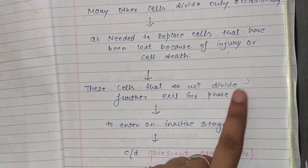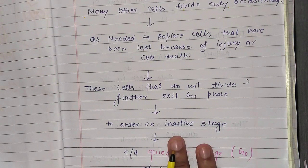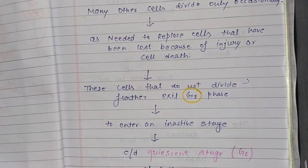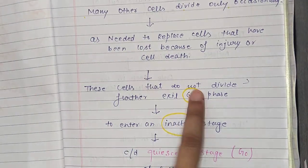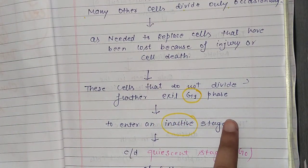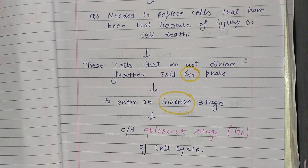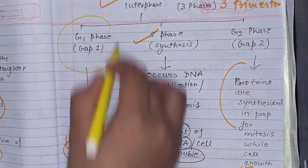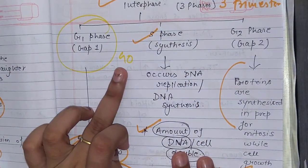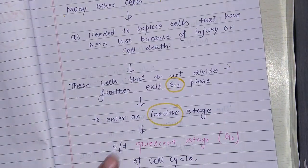Those cells that do not divide further exit the G1 phase. After G1 phase, they do not proceed to S phase. Instead, they exit and enter an inactive stage called the quiescent stage, which is the G0 phase of the cell cycle.